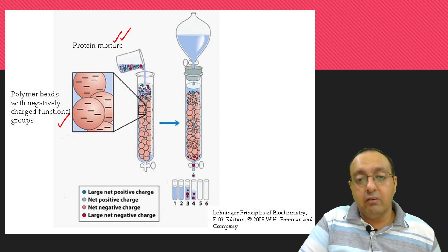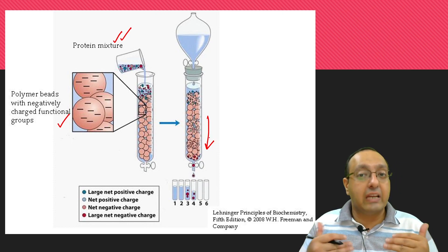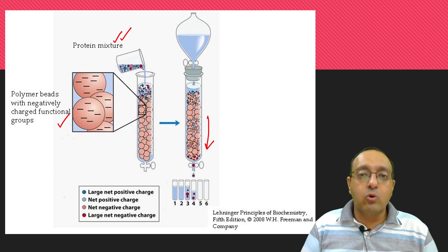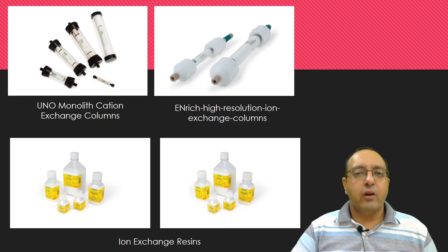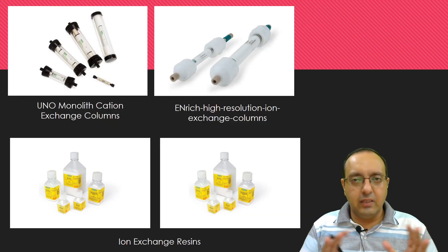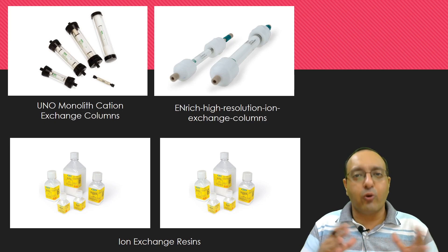For example, in this case, the negatively charged proteins will quickly flow through the column. But positively charged proteins will get stuck. The more positively charged a protein is, the more stuck or more residence time in technical terms it will have in the column.